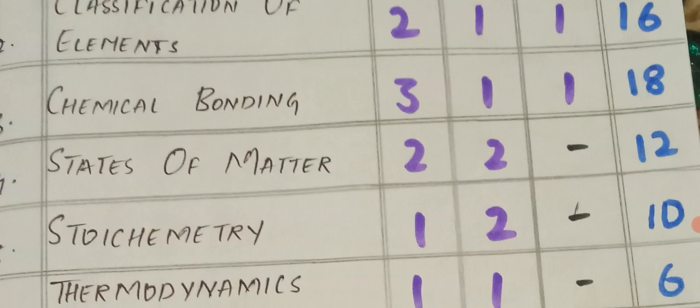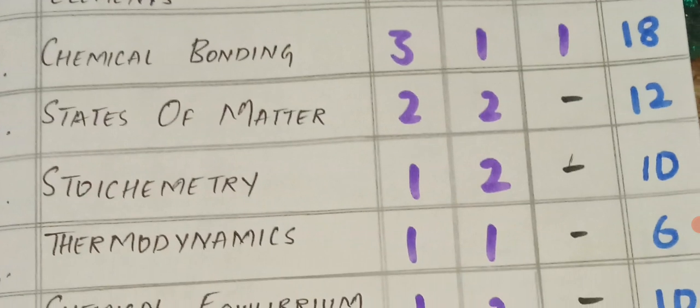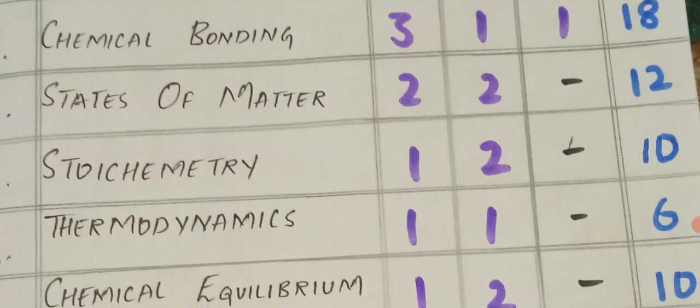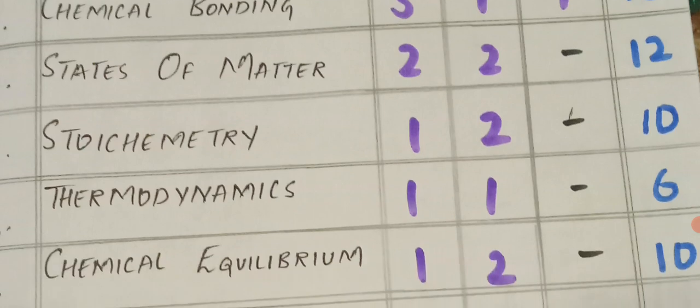States of matter: 2 VSAQs and 2 SAQs, total 12 marks. Stoichiometry: 1 VSAQ and 2 SAQs, total 10 marks. Thermodynamics: 1 VSAQ and 1 SAQ, total 6 marks.